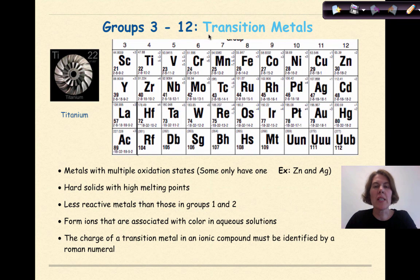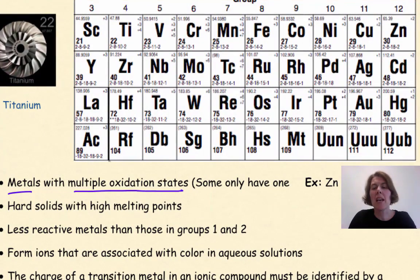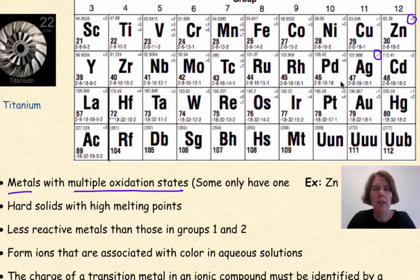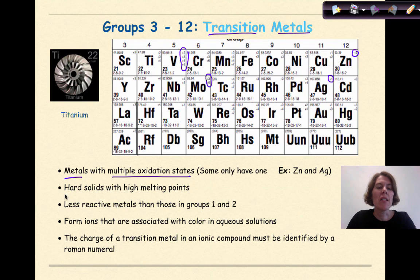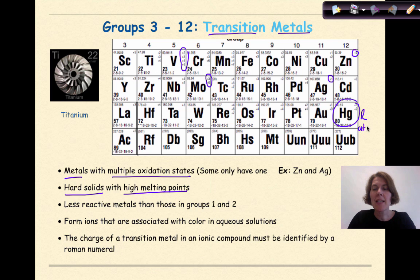Groups 3 through 12 involve the transition metals — metals with multiple oxidation states. Some only have one, like zinc with a plus 2 charge and silver with a plus 1 charge. But others, like vanadium, can be plus 2, plus 3, plus 4, and plus 5; molybdenum can be plus 3 or plus 6; and manganese can be plus 2, plus 3, plus 4, and plus 7. Typically these are hard solids with high melting points. The only exception is mercury, which is a liquid at STP. They are less reactive than metals in Groups 1 and 2.